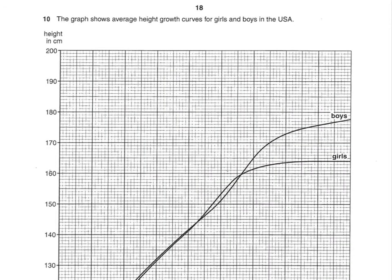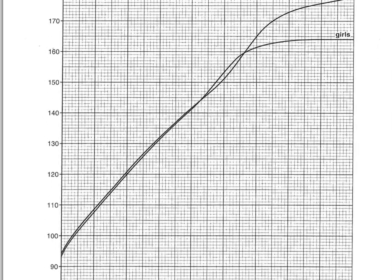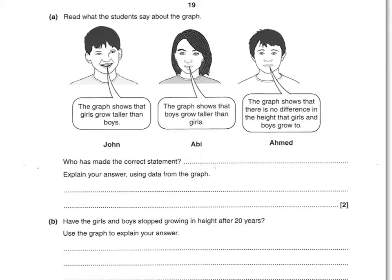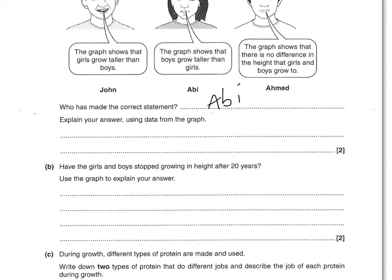The next question shows a graph of average height growth curves for girls and boys in the USA. John says the graph shows that girls grow taller than boys. Abby says boys grow taller than girls. Ahmed says there's no difference. The correct statement is Abby's. Boys grow to around 177 centimetres, whereas girls grow to 164 centimetres, so there is a difference. One mark for choosing the right person — Abby — and one mark for the explanation.